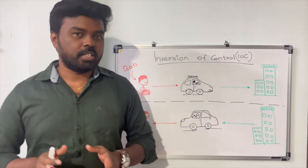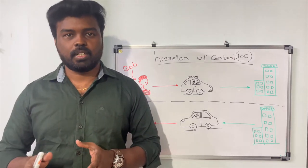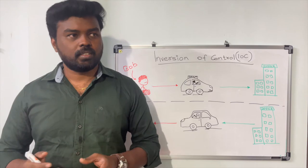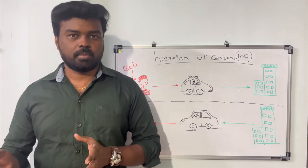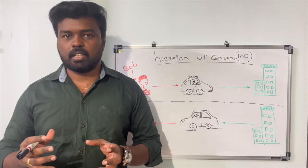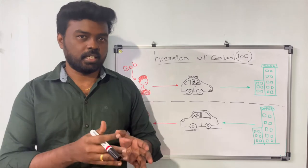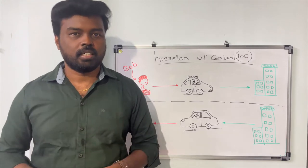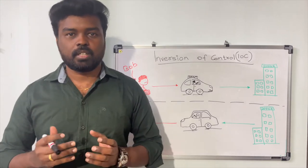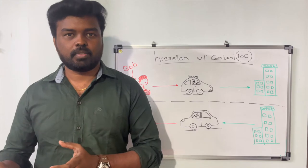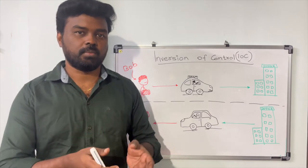The IOC principle focuses on the flow of control in your program. In object-oriented programming, objects have to depend on each other to achieve certain functionality. IOC mainly focuses on how you create the dependencies for those objects and how you supply those dependencies into the objects.